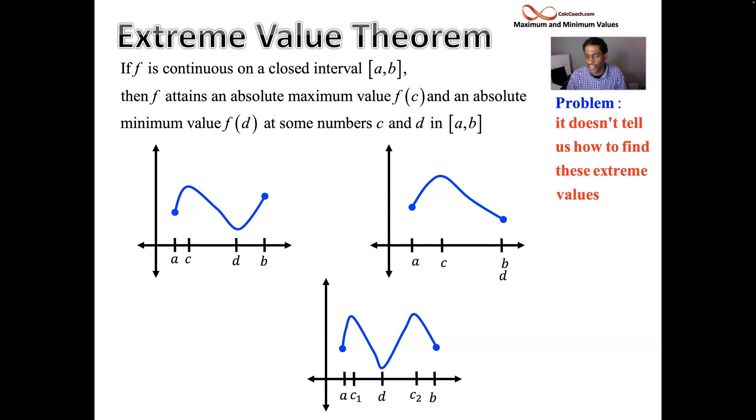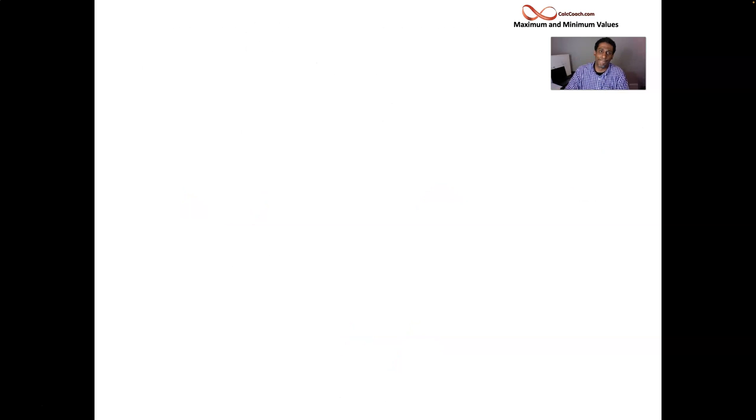We're going to pair this theorem up with another theorem and then we'll have our mechanism to help us find these absolute maximum and absolute minimum values. And later in the next set of videos, we're going to look at how to find the local maximum and the local minimum values. The next theorem is called Fermat's theorem. Now there's many theorems that were made by Fermat. This is the one that's going to help us figure out critical points.